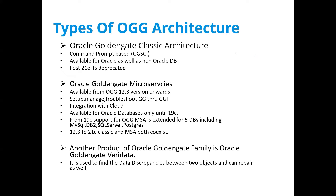In 2017, when the existing architecture was renamed to Classic Architecture, Oracle also launched a new architecture called Micro Services Architecture. Micro Services Architecture was introduced in GoldenGate version 12.3 and is available from 12.3 onwards. It allows you to set up, manage, troubleshoot, and configure GoldenGate through a GUI. One of the key features of GoldenGate Micro Services is this GUI-based management.